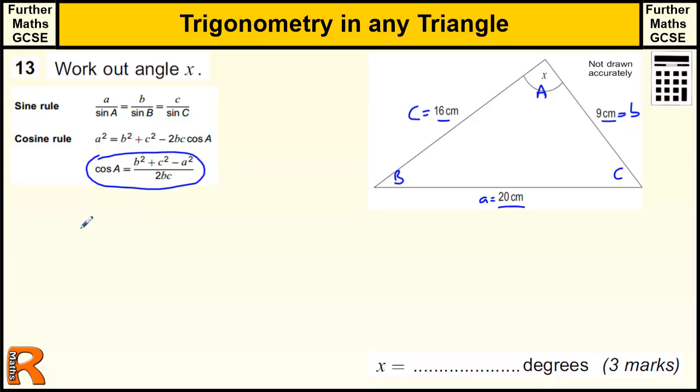So we're just going to put the numbers into the formula. We've got the cos of the angle A, which is actually X in this question, cos X, is b squared which is 9 squared plus c squared which is 16 squared, minus, sorry not twice a, so a squared, 20 squared, all over 2 times 9 times 16. I'm going to bring the calculator in for this.